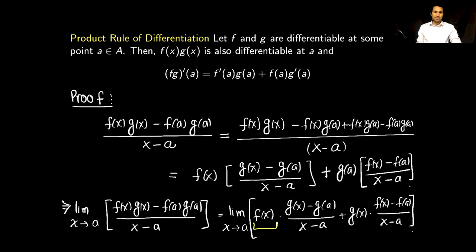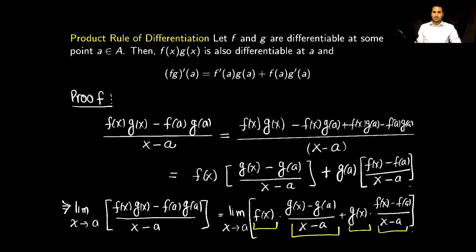So if I take the limit as x approaches a of f(x), it will exist. This limit — the quotient [g(x) minus g(a)] divided by (x minus a) — exists because g is differentiable at a, and this is the definition of differentiability. Similarly, g is continuous at a, so that limit exists, and the limit involving f is differentiable at a, so that limit also exists.